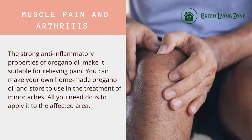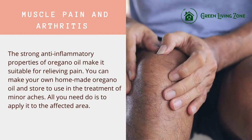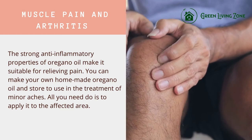Muscle pain and arthritis: the strong anti-inflammatory properties of oregano oil make it suitable for relieving pain. You can make your own homemade oregano oil and store it to use in the treatment of minor aches — simply apply it to the affected area.